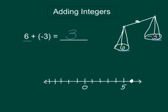How you think of a number line, you can think of 6 plus a negative 3. If you're adding 3 negatives, you're going to go back 3 spaces, and you end up at a positive 3.